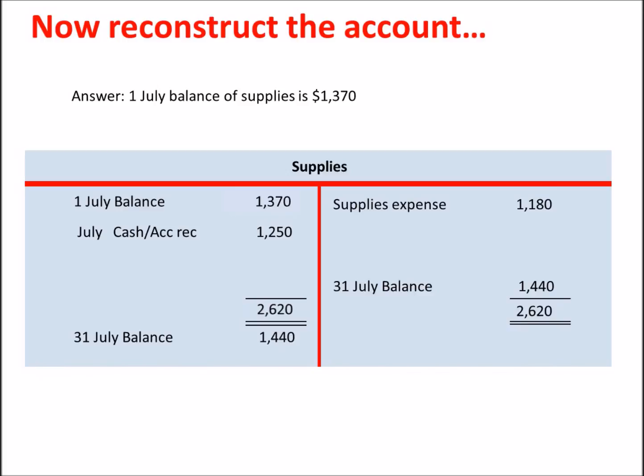So that's the answer to our question - the balance on the 1st of July is $1,370. This sort of question tests both your knowledge of balance day adjustments, posting to t-accounts, and balancing t-accounts.